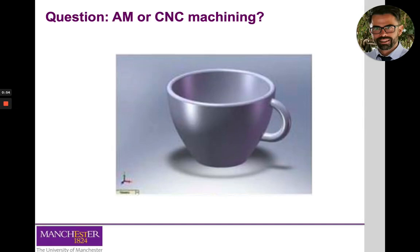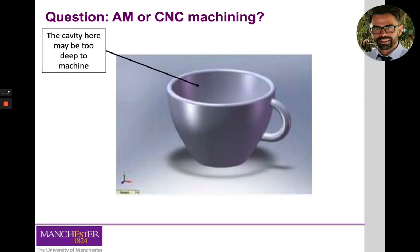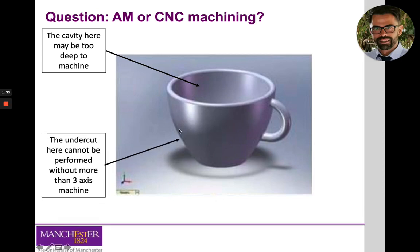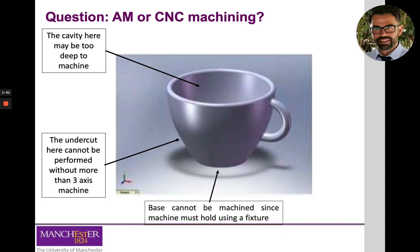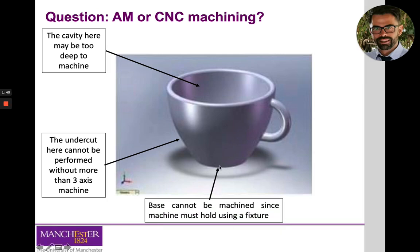I left you with a question in the previous lecture: what challenges could you find in manufacturing this cup using additive manufacturing or CNC machining? If you decided to go with conventional CNC machining, one of the problems would be generating this cavity, which could be too deep for the cutting tool and would likely clash with the walls. Another problem is these undercuts, which normally cannot be performed without a machine that has at least five axes.